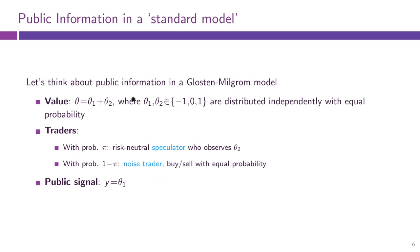Let us look at a simple example of how public information works in the Glosten-Milgram model. We have an asset with value θ = θ_1 + θ_2, where both components can be −1, 0, or 1, are independent, and are equiprobable. With probability π a trader is an informed speculator who observes θ_2, and with probability 1−π the trader is uninformed and just buys or sells with equal probability. Both agents observe the public signal y = θ_1.